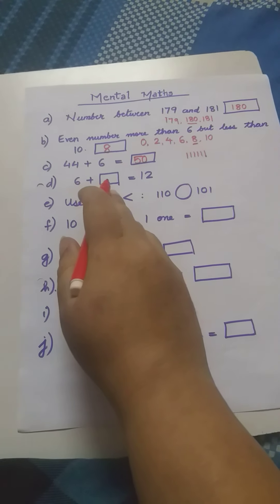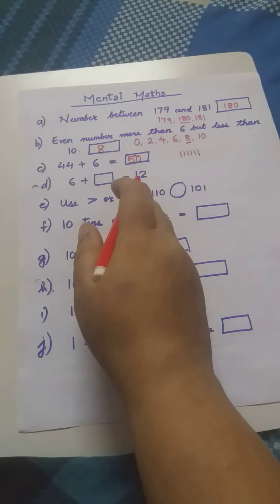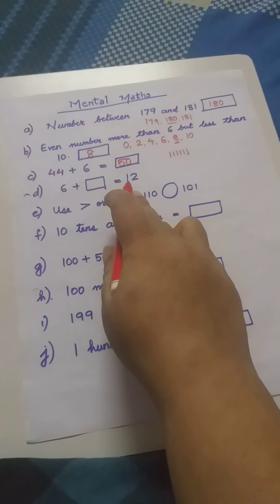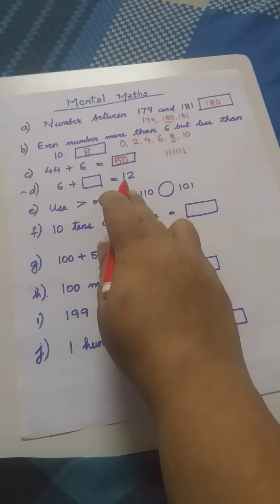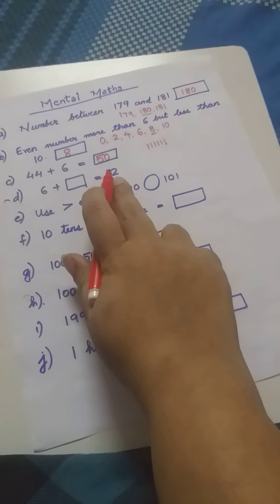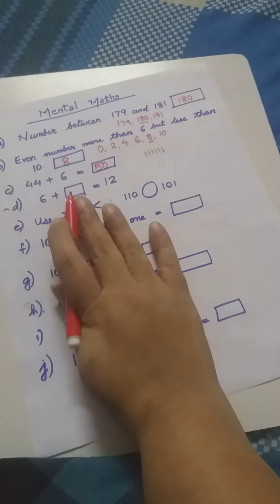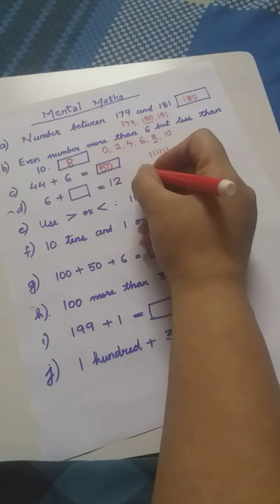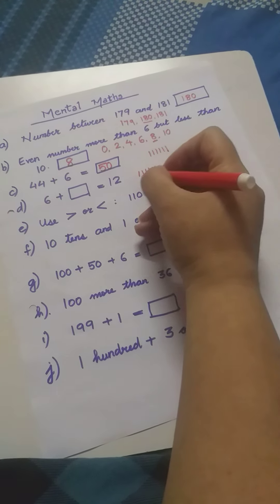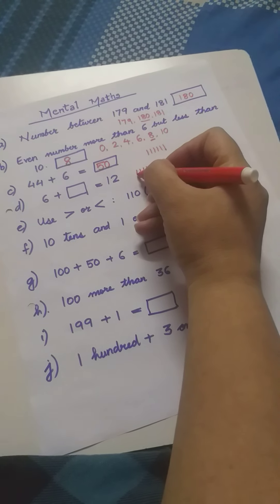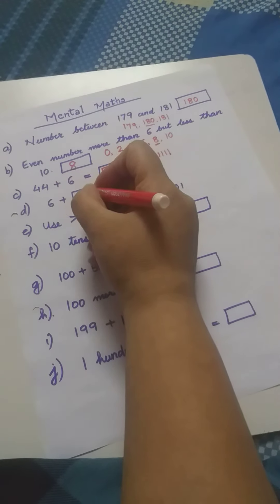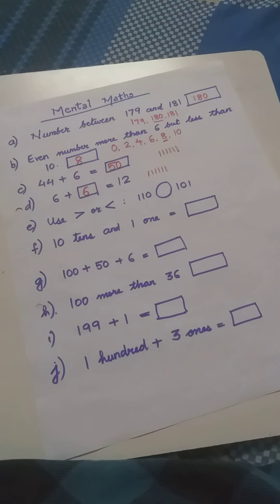Next question: 6 plus what is equal to 12? You have 6 toffees but you wanted 12. So how many more do you need to make it 12? We will tap 6 and count till 12. We will draw the lines: 6, 7, 8, 9, 10, 11, 12. How many lines are there? Let's count: 1, 2, 3, 4, 5, 6. So, 6 plus 6 is equal to 12.